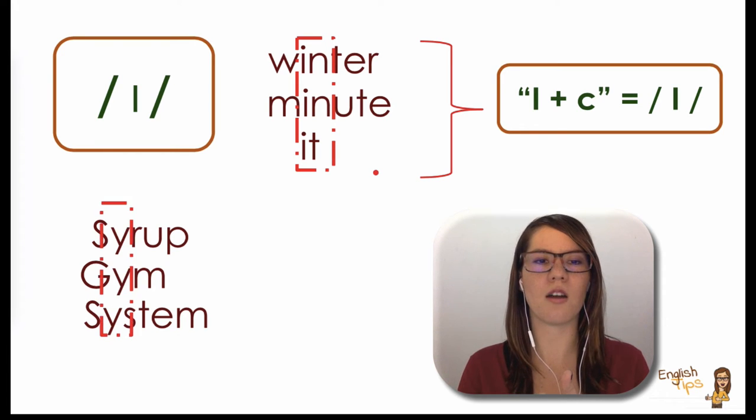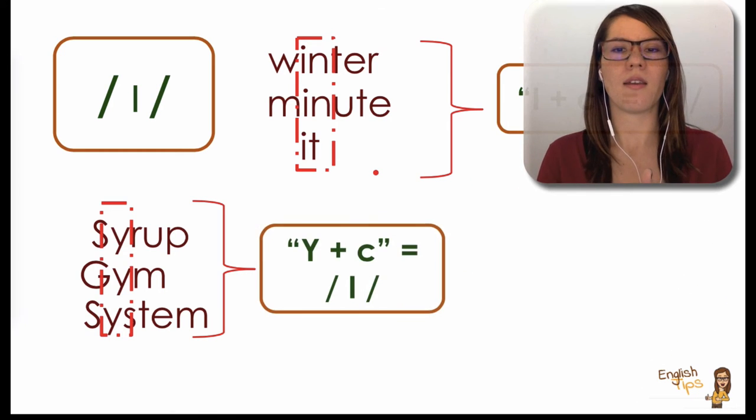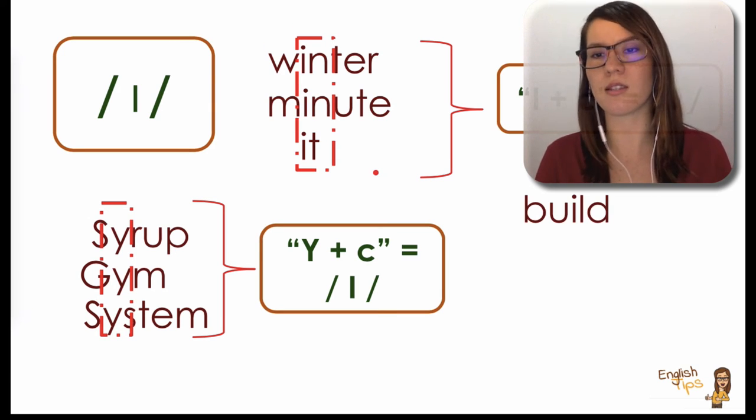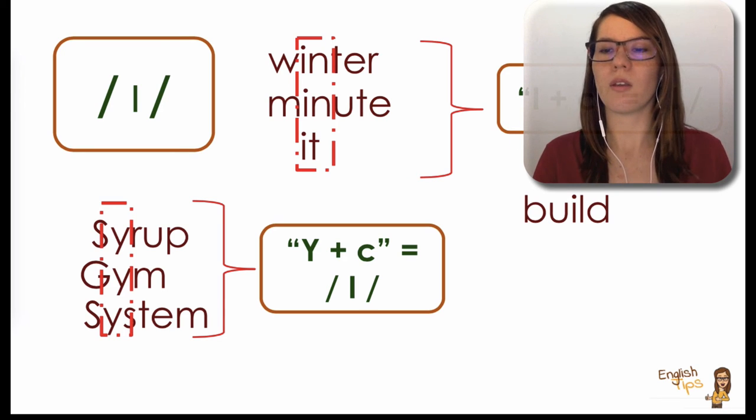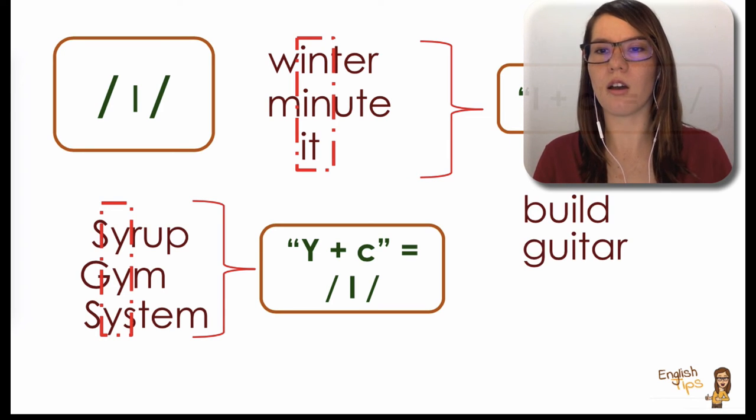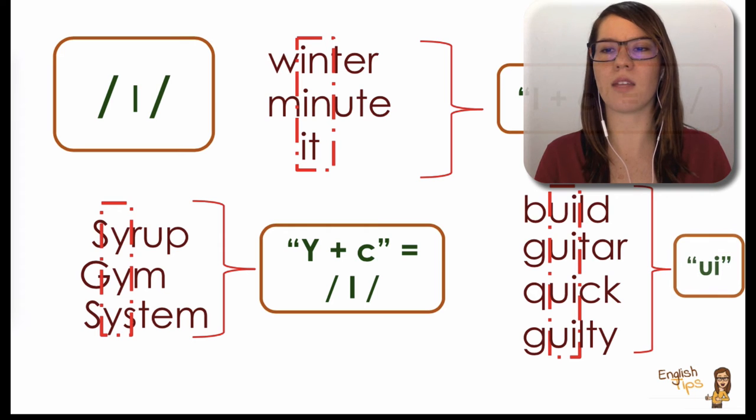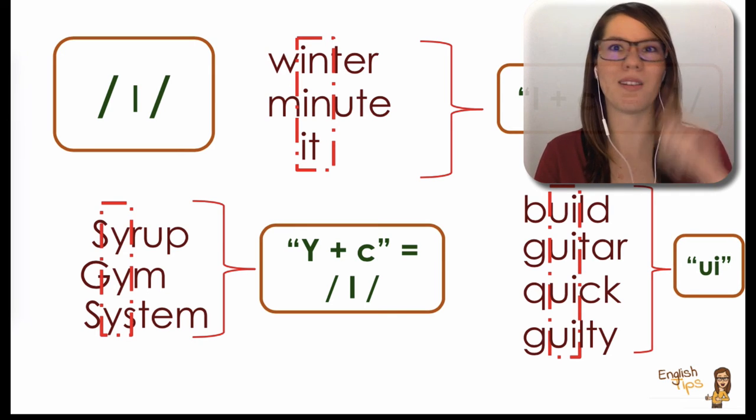For example, look at the words syrup or gym or system. Here we have the combination of the letter Y plus a consonant. And there's still another group that is less frequent, and we can find words such as build or guitar. Also we have quick and guilty, and here the sound would be /ɪ/ even though we spell UI.